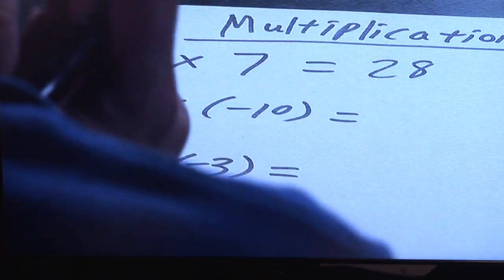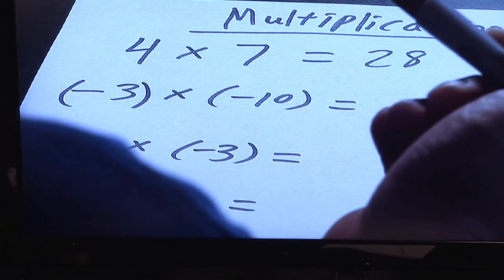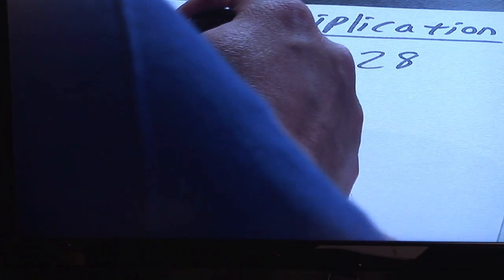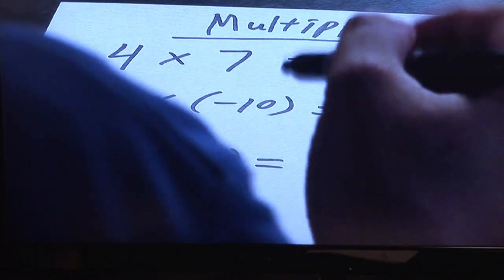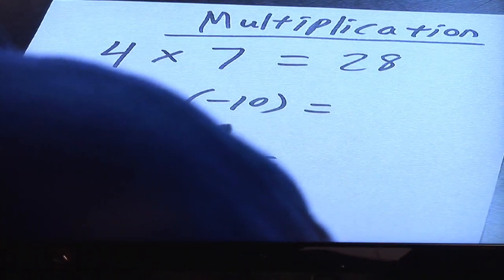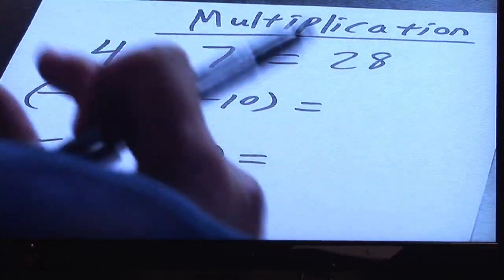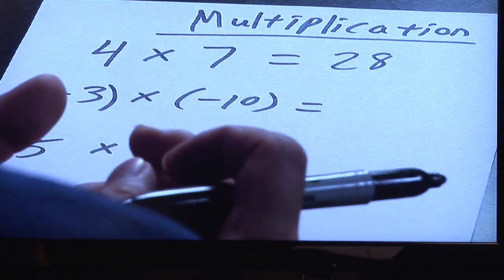In fact, if the two numbers have the same sign, it's always going to be positive. Positive times positive is going to give you a positive number, but if you have a negative times a negative, that's going to give you a positive because the negative signs cancel each other out. So whenever you have two numbers multiplied together that have the same sign, your end result is always going to be positive.